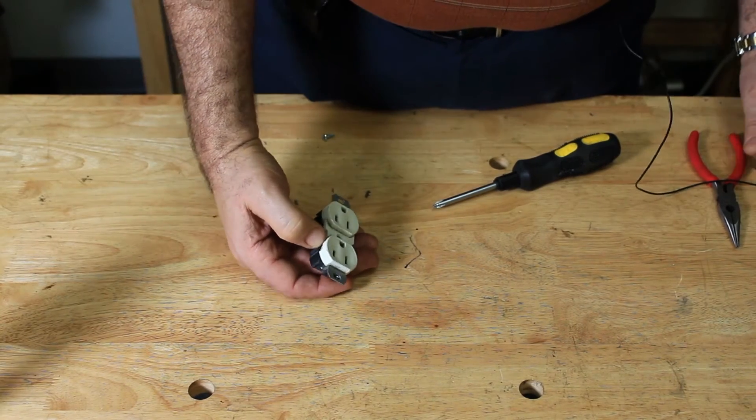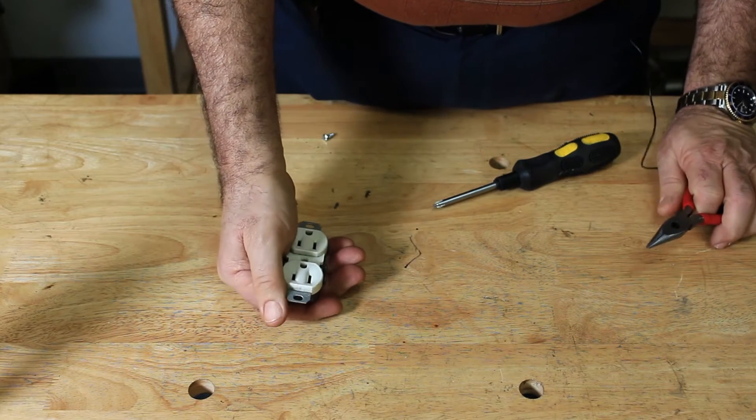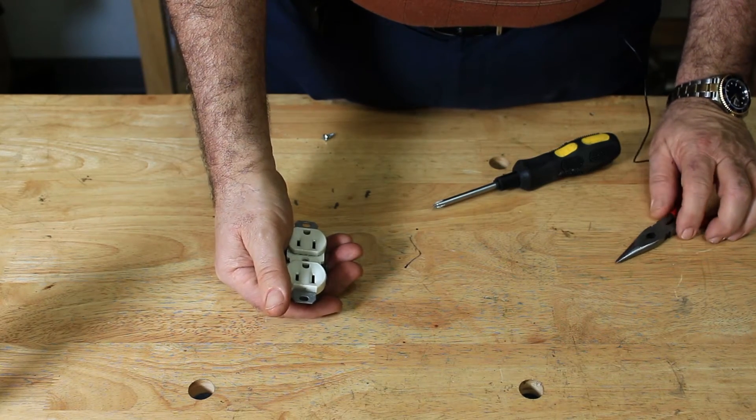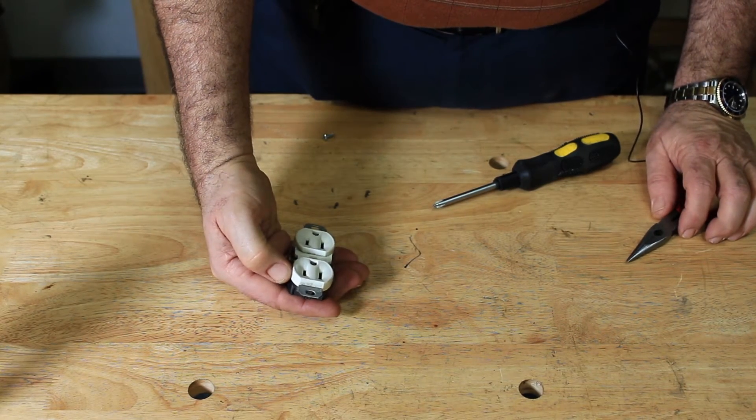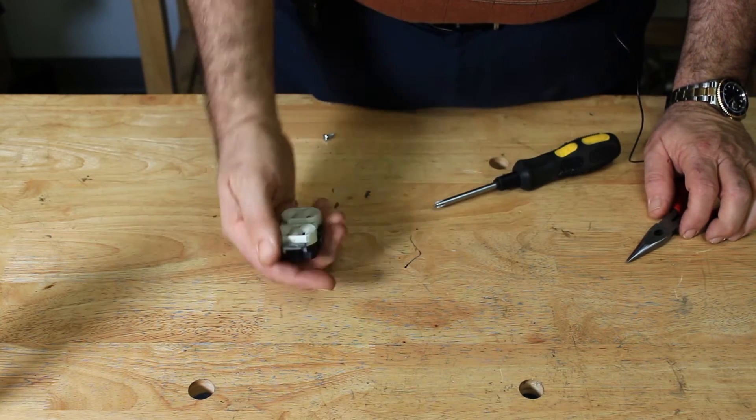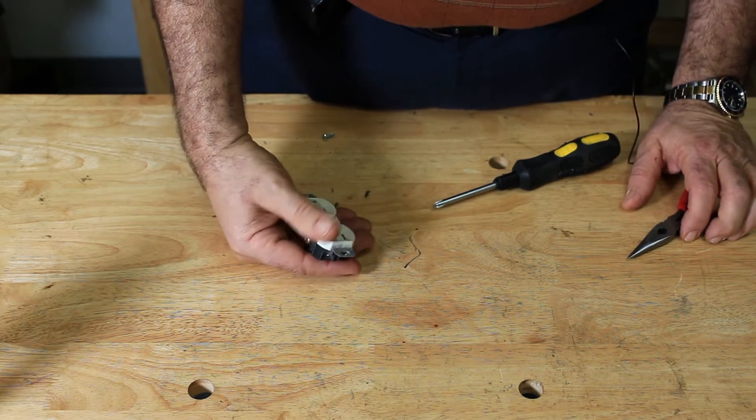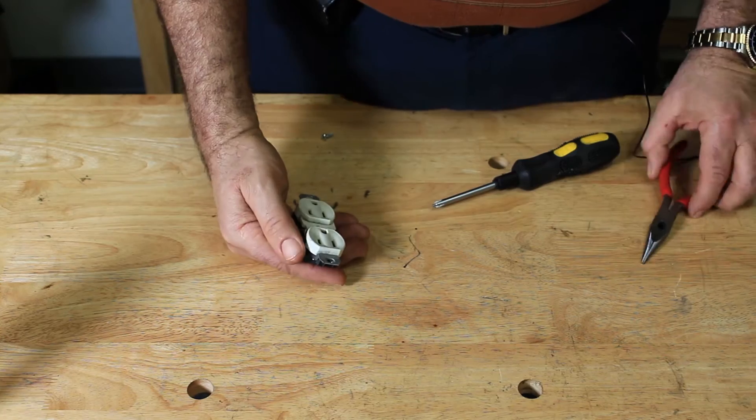All right, so we get this question all the time concerning the TI3B induction cooktop. Coming out of the back of it are two plugs that plug into a regular 15 amp, 110 volt circuit. But a lot of people are replacing it where they have 220 volts. So I'm going to show you quickly how to make a conversion.